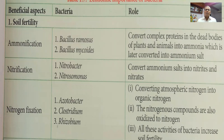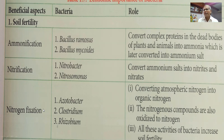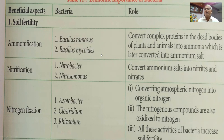Beneficial aspects: First, soil fertility. Ammonification is the conversion of complex proteins into ammonia. The main function of Bacillus ramosus and Bacillus mycoides is to convert complex proteins in the dead bodies of plants and animals into ammonia, which is later converted into ammonium salt.